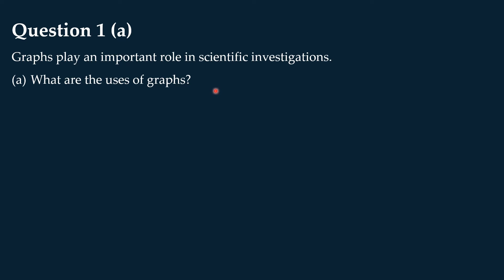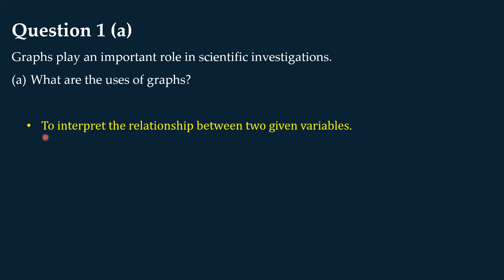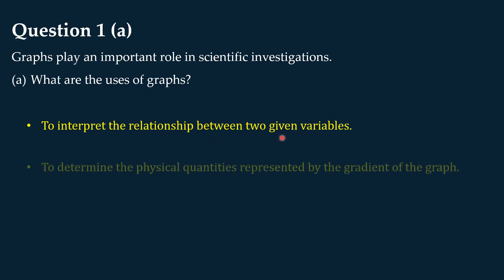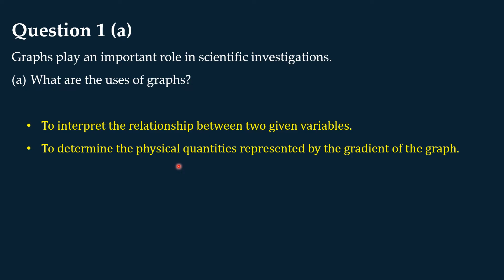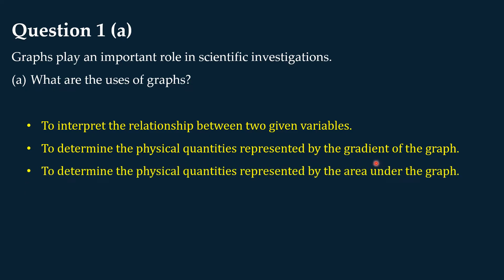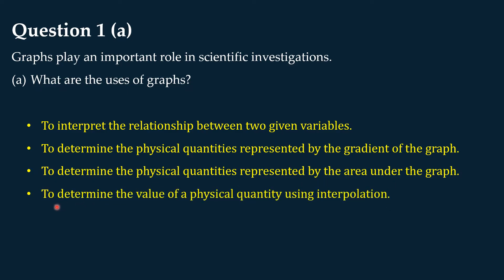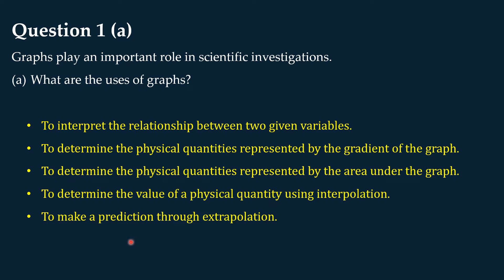So the five uses of graphs are: first, to interpret the relationship between two given variables; second, to determine the physical quantity represented by the gradient of the graph; third, to determine the physical quantity represented by the area under the graph; fourth, to determine values of a physical quantity using interpolation; and fifth, to make predictions through extrapolation of the graph.